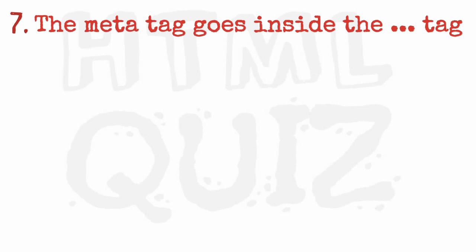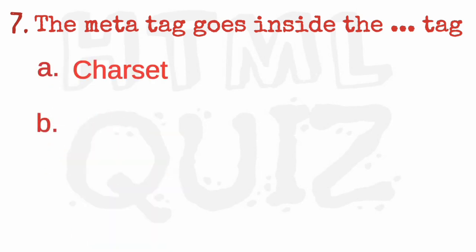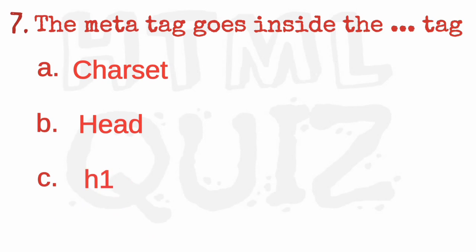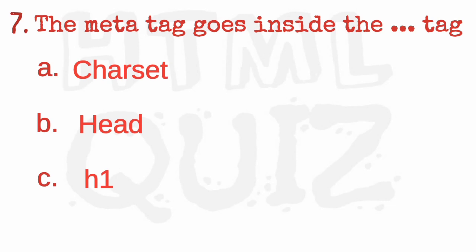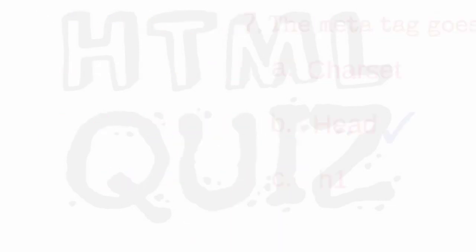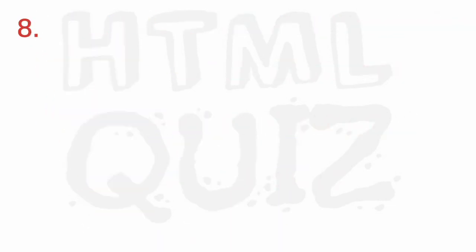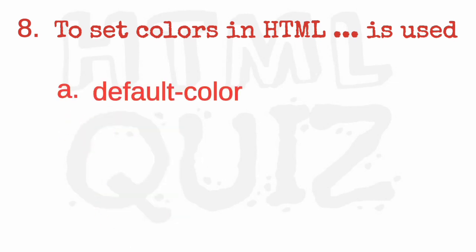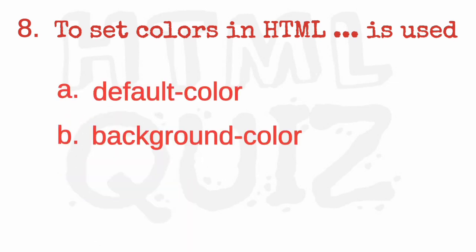The meta tag goes inside the blank tag. The right answer is the head tag. The tag to set colors in HTML — blank — is used.